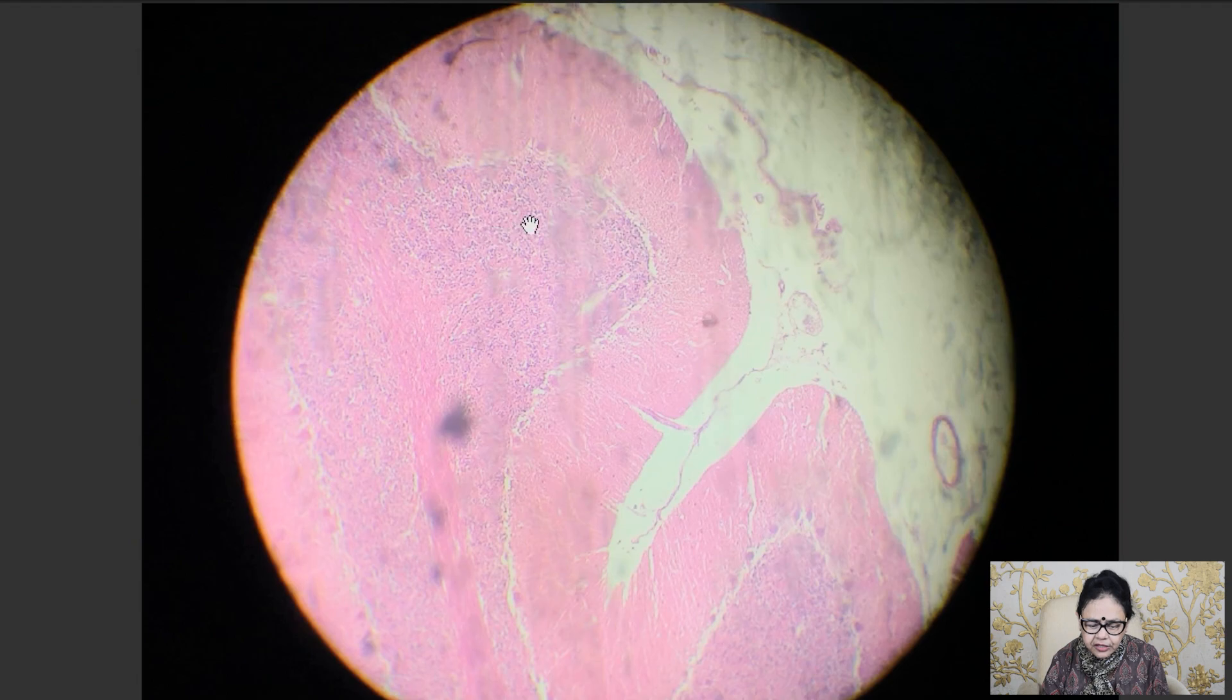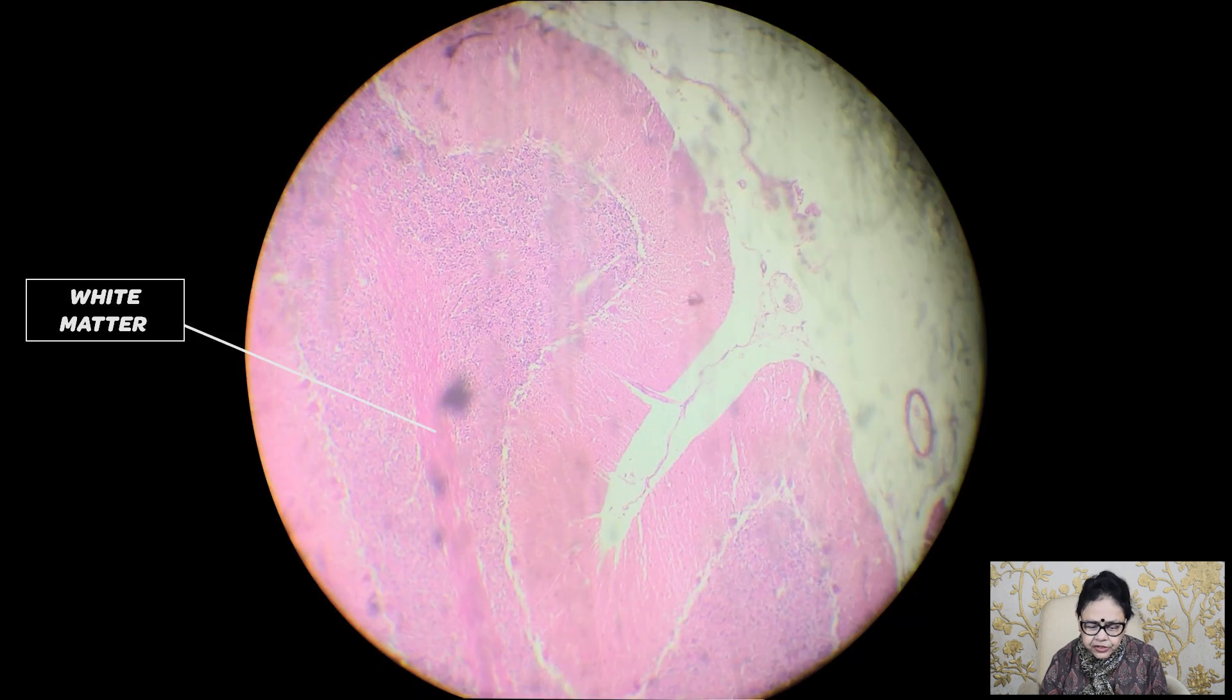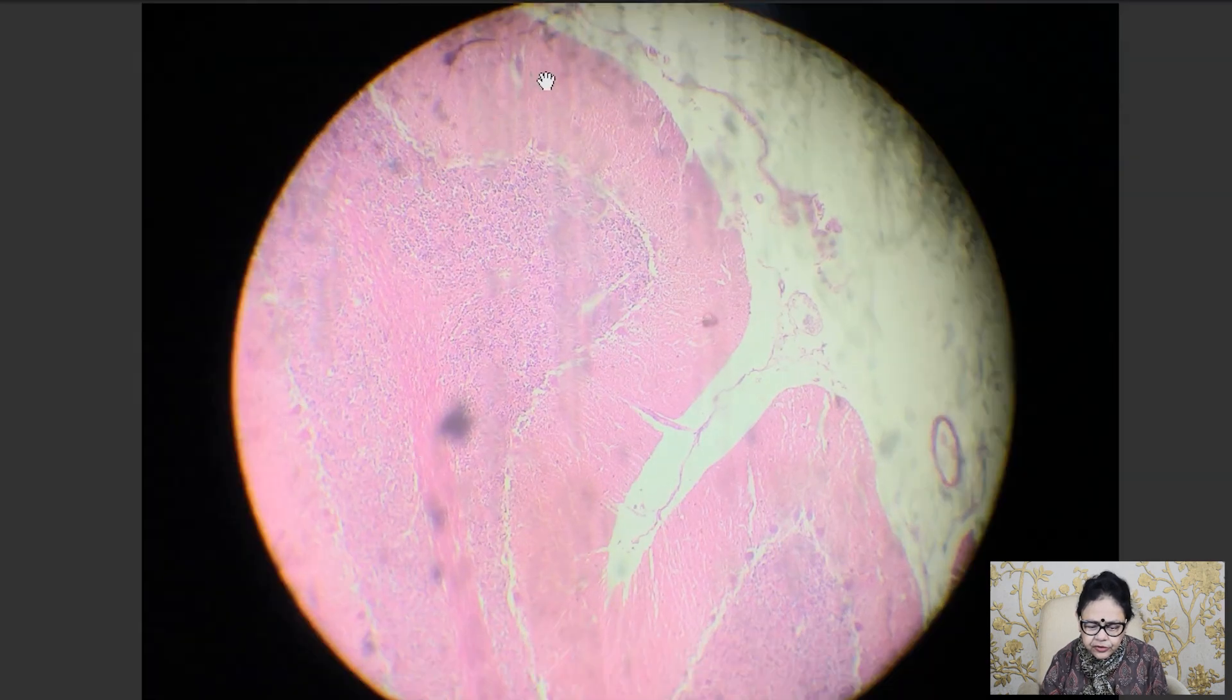Next to this Purkinje cell layer, you will see the granular cell layer, which is dark stained, blue stained. Inside the granular layer, you will see another pink color structure - that is the white matter in section.